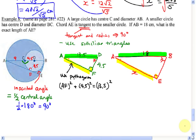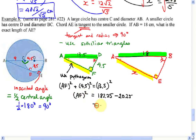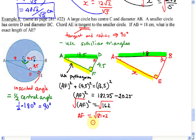What's 13.5 squared? That's 182.25. And 4.5 squared is 20.25. Subtracting: AF² equals 182.25 minus 20.25, which equals 162. Taking the square root: AF equals root 162. Simplifying: 162 equals 2 times 81, and 81 is a perfect square, so that's 9 root 2. AF equals 9 root 2.